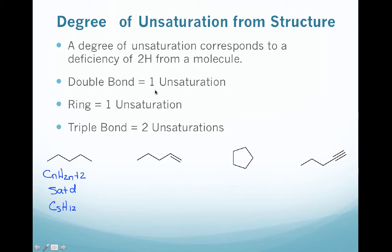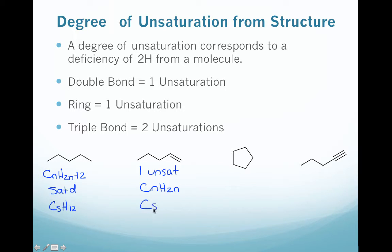Anytime you have a double bond, that corresponds to 1 unsaturation. This molecule, which is 1-pentene, has 1 unsaturation due to the double bond. That corresponds to a loss of 2 hydrogens, so now we have CnH2n — that's the formula for an alkene — giving us C5H10. Going from pentane to pentene, we've lost 2 hydrogens corresponding to that 1 unsaturation.